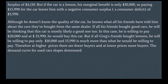Although Greg doesn't know the quality of the car, he knows what his friends have told him about cars bought from the same dealer. If all his friends bought good cars, he will think this car is most likely a good one too. In this case, he is willing to pay $20,000 and at $15,990, he would buy it. But if all Greg's friends bought lemons, he will be willing to pay only $10,000, and $15,990 is much more than he would pay. Therefore, at higher prices there are fewer buyers and at lower prices there are more buyers — the demand curve for used cars slopes downward.